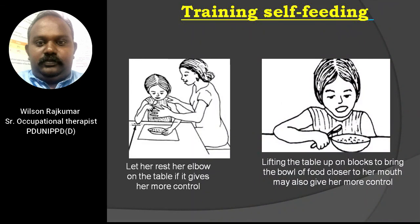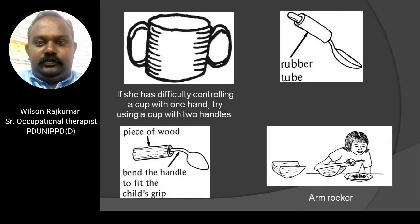To train a child in self-feeding, let the elbow rest on the table for more control, and raise the table on blocks to bring the bowl closer to the mouth. If the child has difficulty holding a cup with one hand, use a two-handled cup. If the spoon slips, use a rubber tube on the handle. If grip is weak, add a piece of wood around the spoon handle and bend the neck of the spoon to fit the child's grip. If there is difficulty with wrist flexion and extension, use an arm rocker board to improve self-feeding.